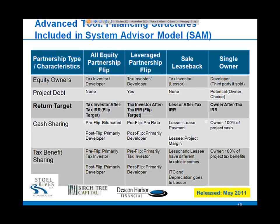As a summary, cash sharing by structure will be bifurcated under the all equity flip structure but mostly pro-rata under the leveraged partnership flip. Tax benefits will flow as explained. One important aspect is that the return target within each structure has you solving for a slightly different metric: within the all equity and leveraged partnership flips, you're solving for the tax investor's after-tax IRR; within the sale leaseback, for the lessor's after-tax IRR; and within the single owner, for the owner's after-tax IRR.